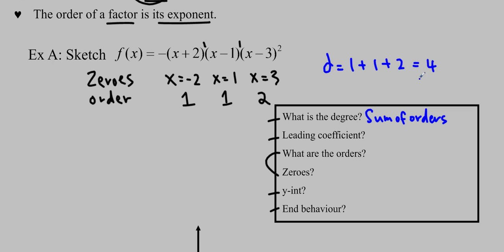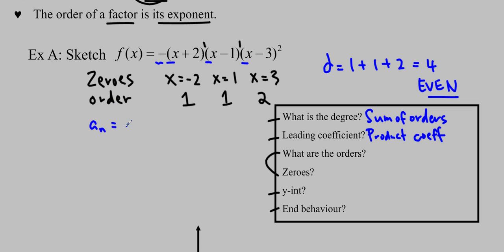The important part is that the degree is even. The leading coefficient is going to be the product of the coefficients. Here we've got a negative, and then 1, 1, and another 1. So the leading coefficient is negative times 1 to the 1, times 1 to the 1, times 1 squared — and it's really important to include those exponents, especially if they're not 1s. It becomes negative 1, and the important part is that it is negative.